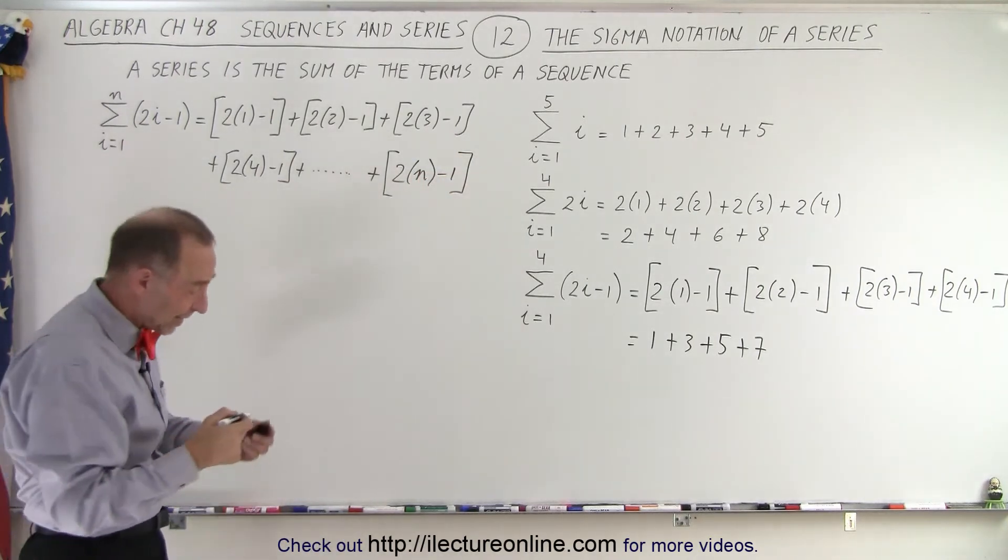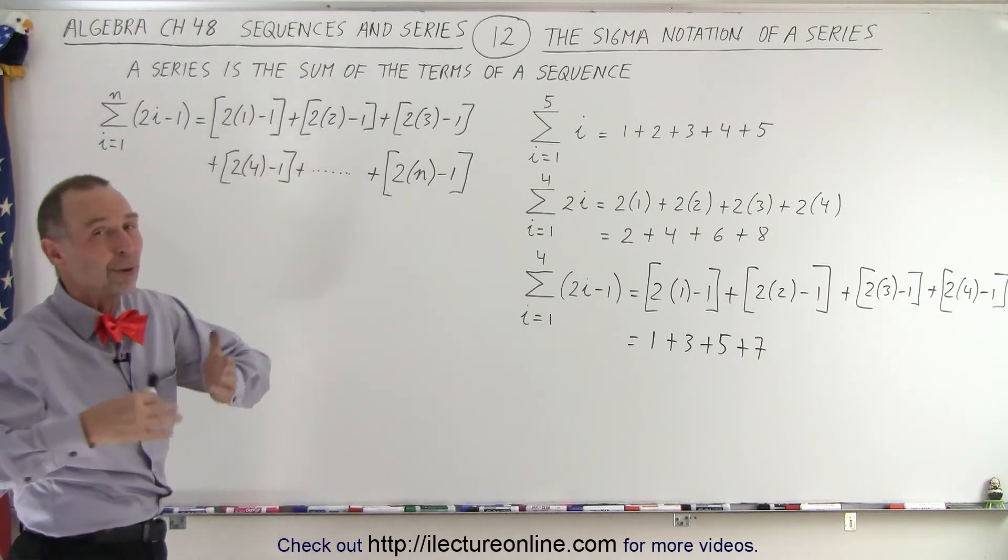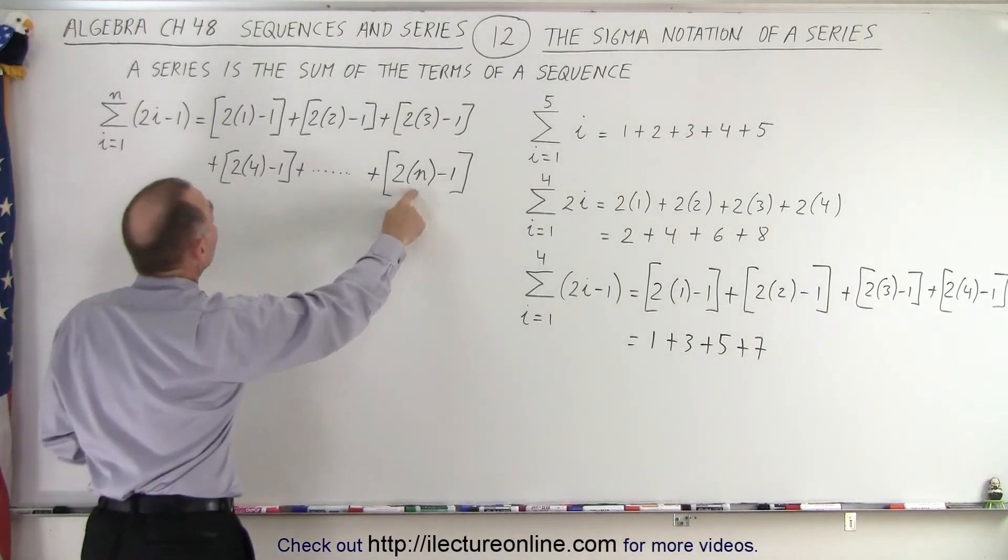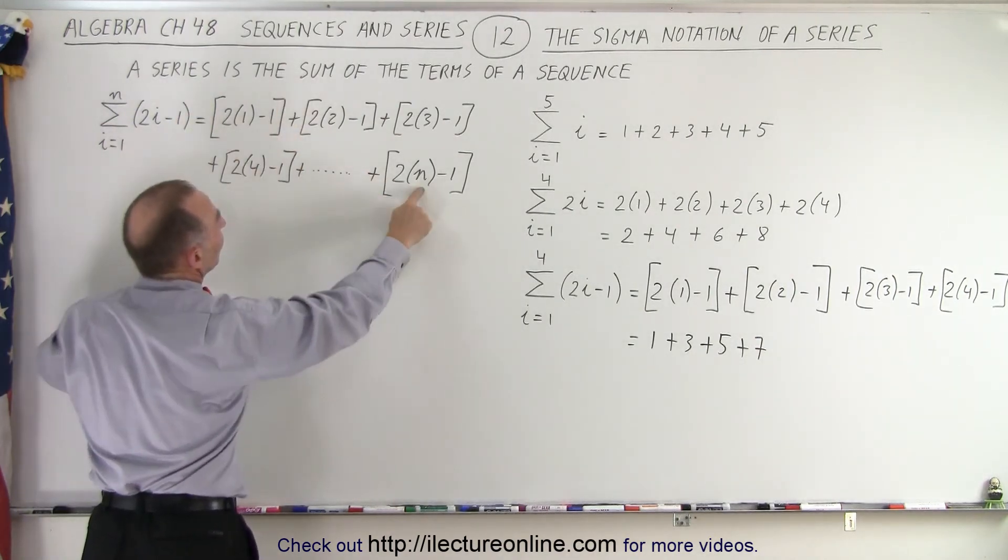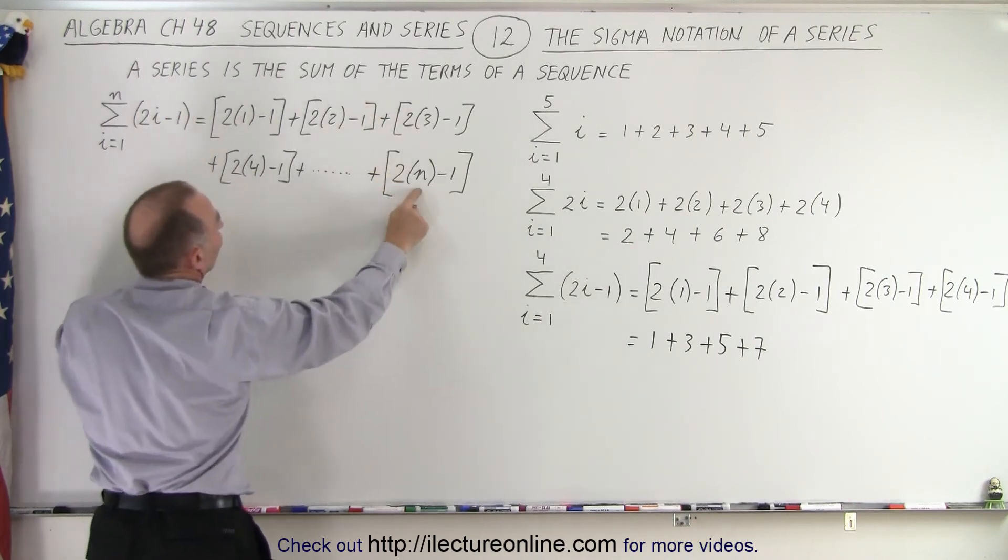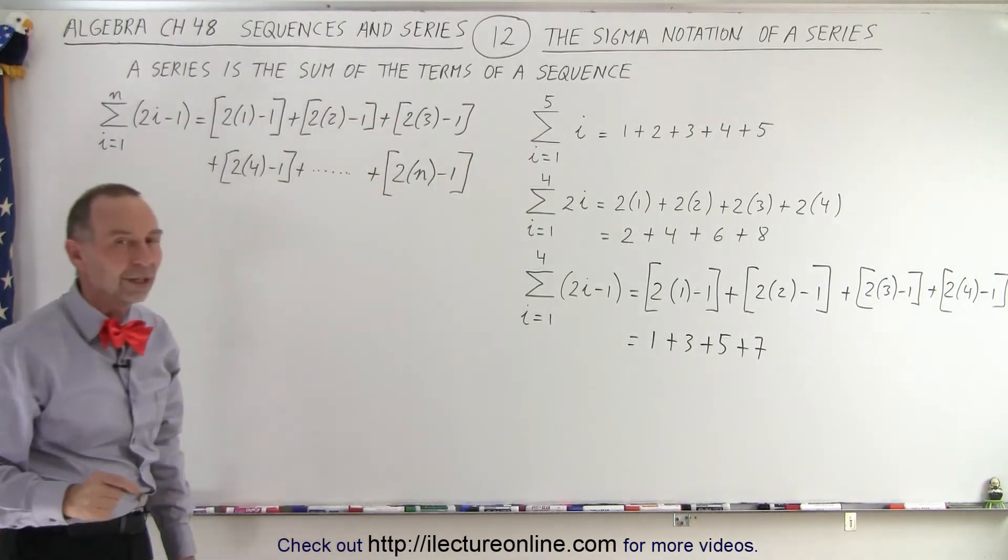It can be 5, 6, 7, 8, 9, 10, could be 2, could be 1. If n is equal to 1 then we stop right here. If n is equal to 2 then we stop here. If n is equal to 3 we stop with those three terms and so forth.